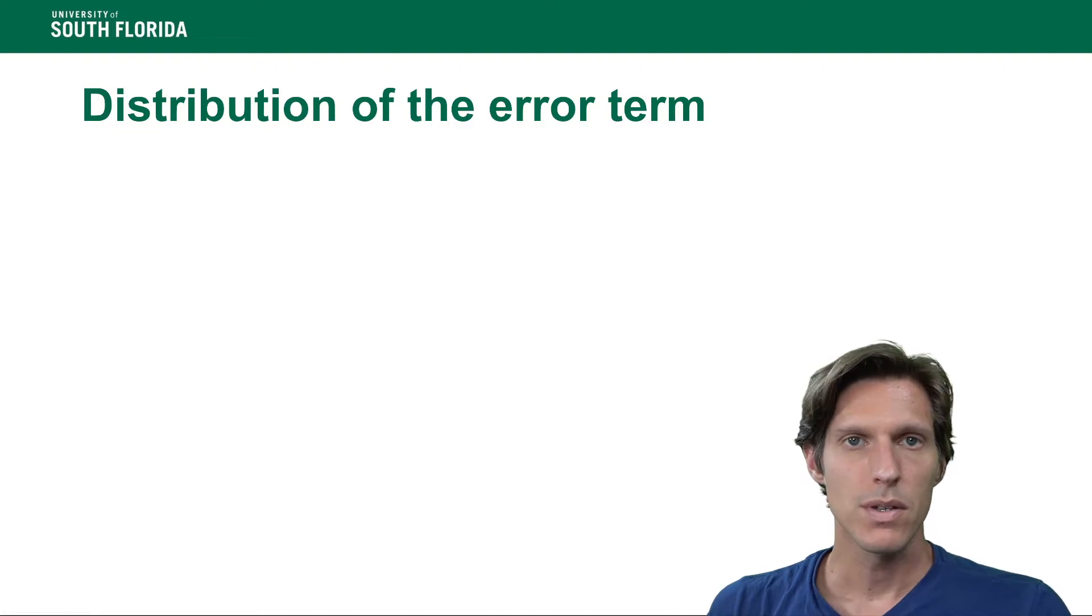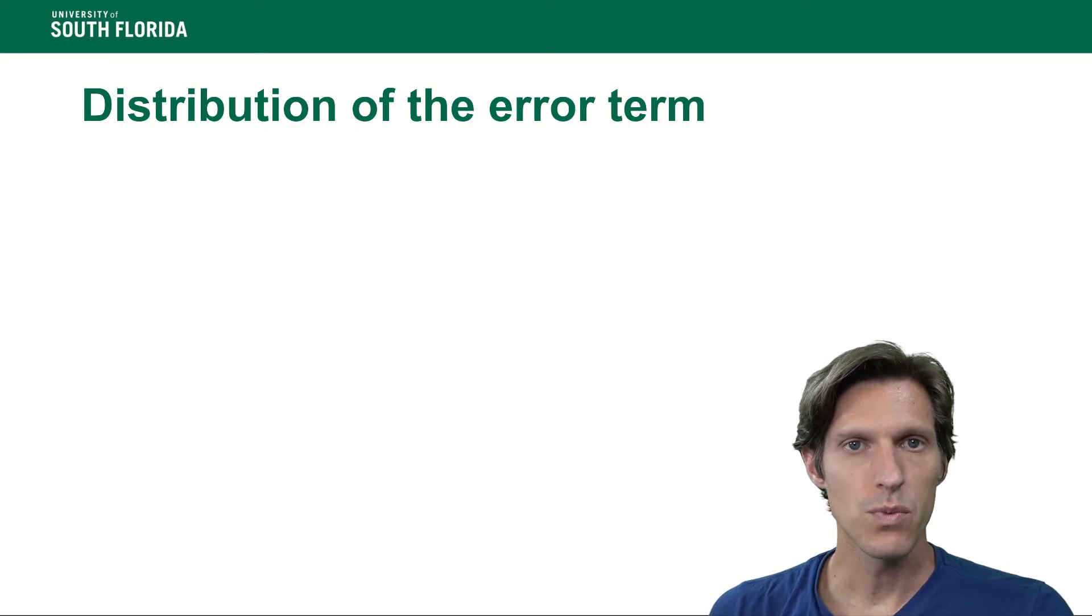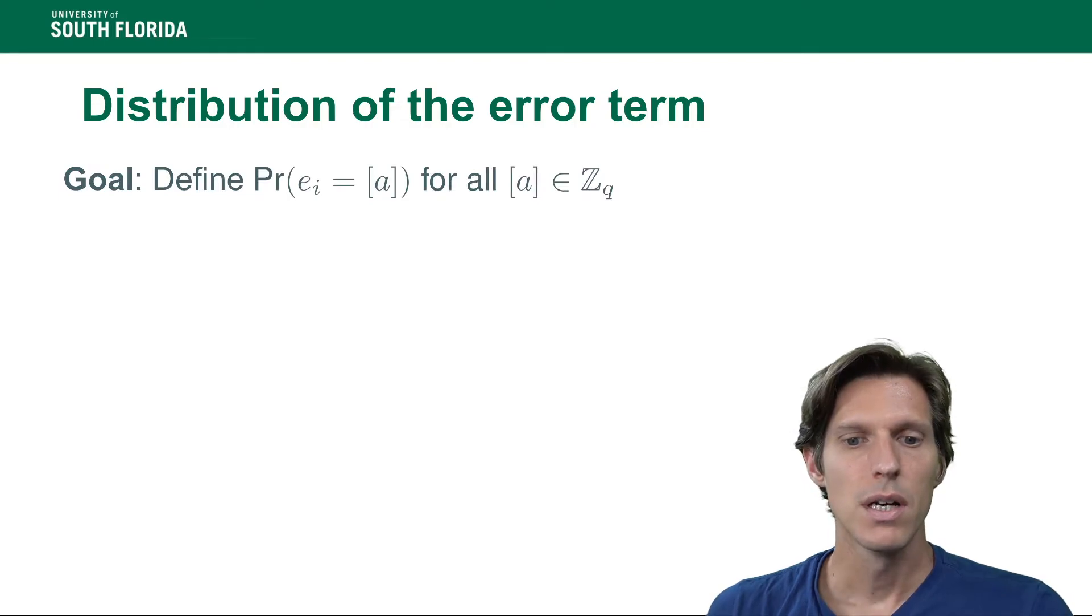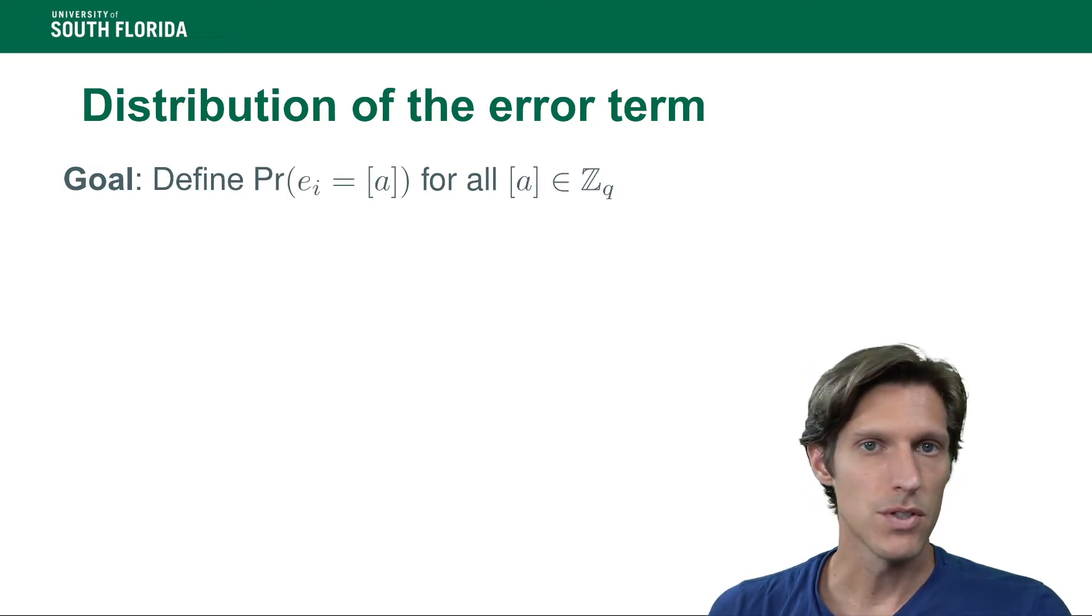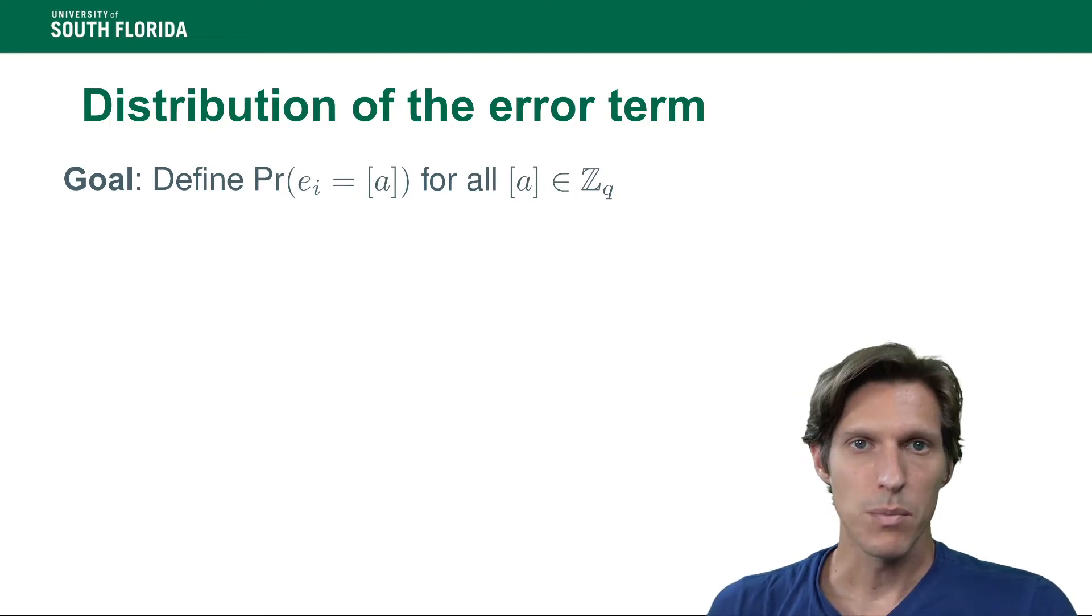Now the error needs to be drawn at random according to a certain distribution. So certain distributions had the value that we know certain proofs of hardness in the sense that we can say the learning with error problem or this particular error distribution is at least as hard as this particular computational problem that has been studied for a long time. Now in some applications people use other distributions than the ones for which we know a proof and that can be okay heuristically.